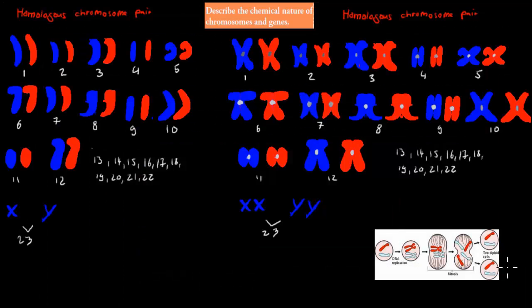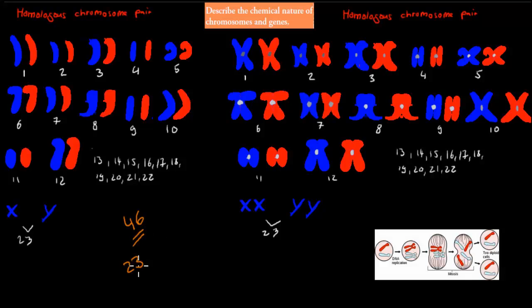If I were to ask you how many chromosomes every single human cell usually has, you would tell me that most cells in our nucleus have 46 chromosomes. We have 23 pairs, to be more exact — and 23 pairs means 2 times 23, which gives our total number of 46.